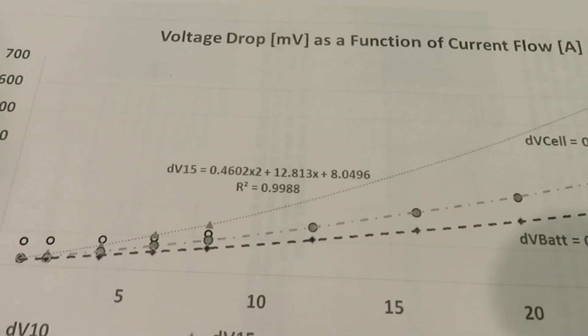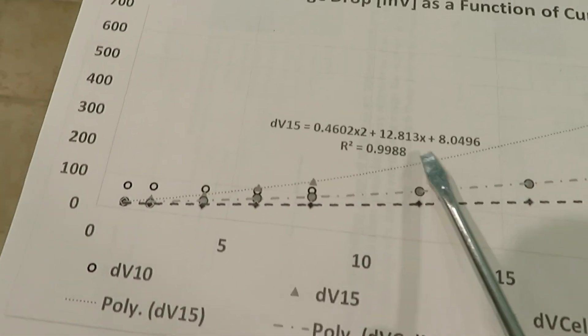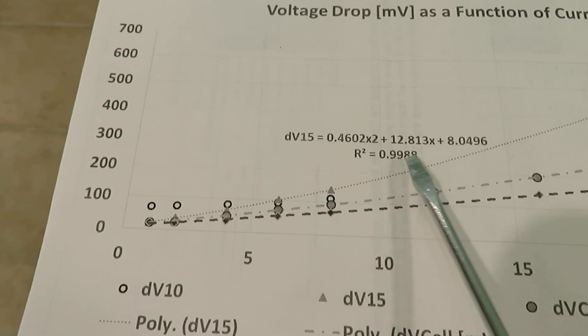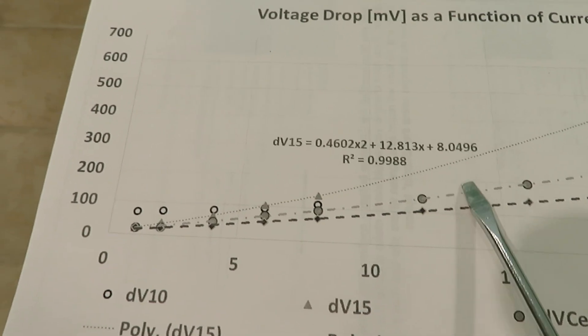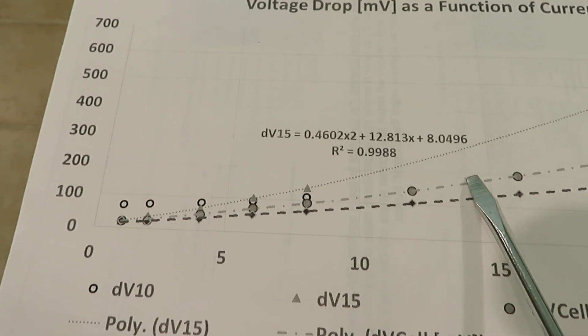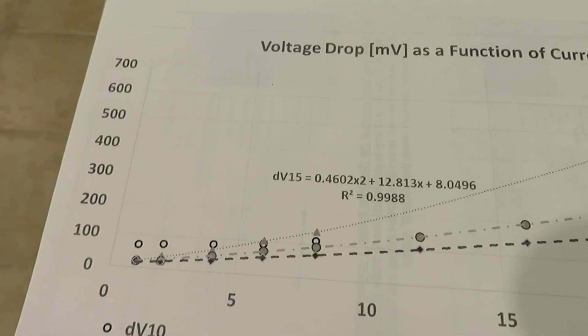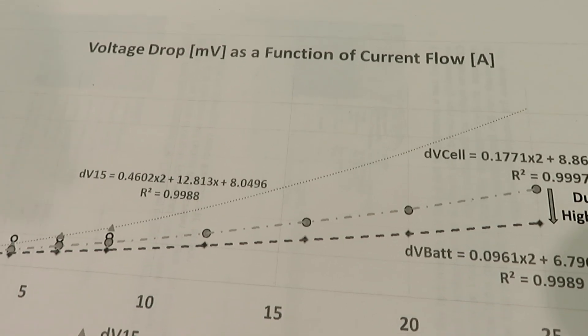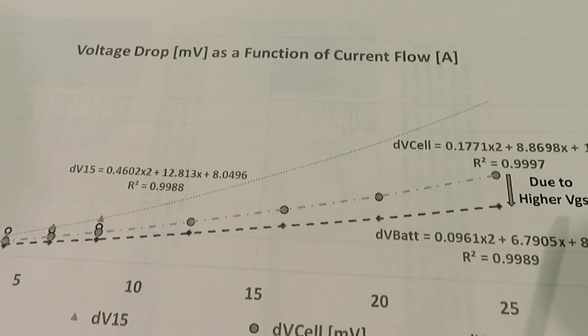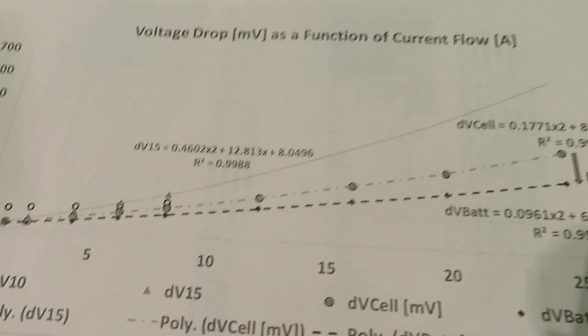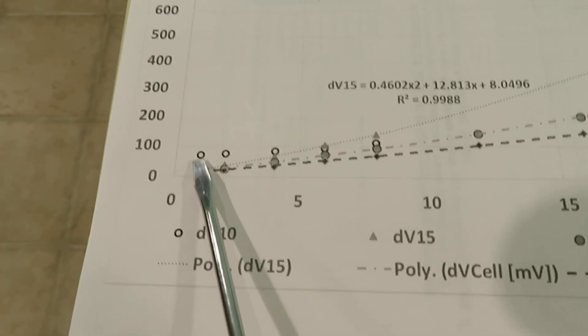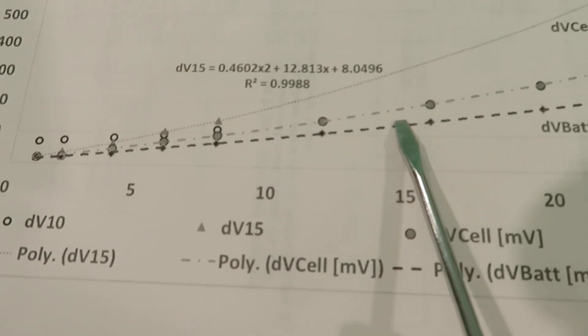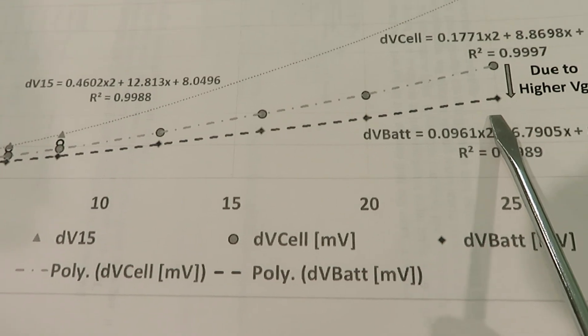This is charging a single cell. Charging a single cell at about 3.65 volts is a tougher job than charging a battery because of the VGS, the gate to source voltage of the MOSFET. When I charge a battery which is 13 volts or higher, the battery performance is better and the voltage drop is much lower.